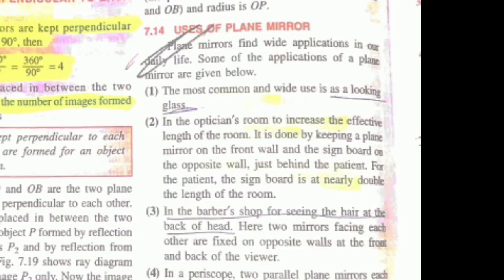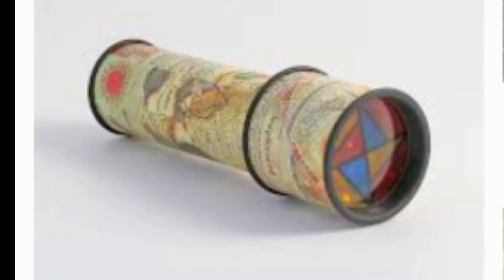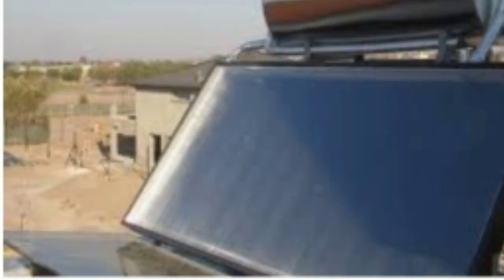Uses of plain mirrors: first as a looking glass, second in barber shops for seeing the hair at the back of the head, in periscope where the mirrors are inclined at 45 degrees, in kaleidoscope where three mirrors are inclined with each other at 60 degrees, and in solar heating devices.